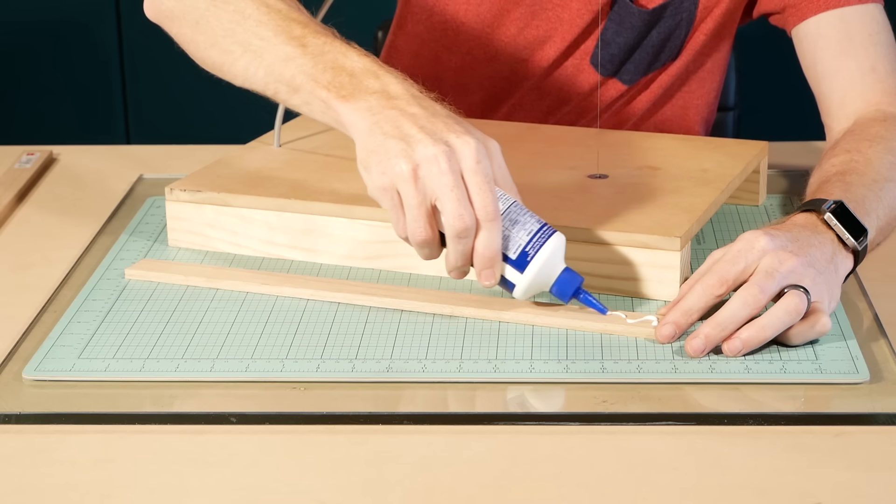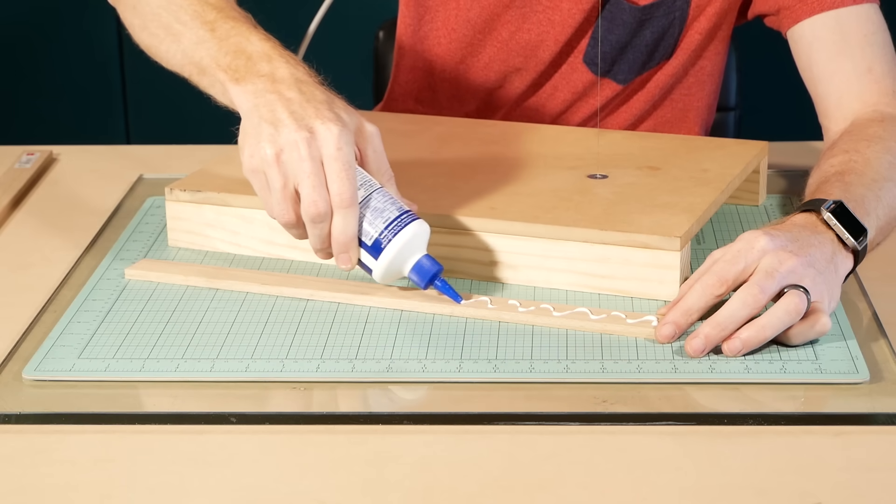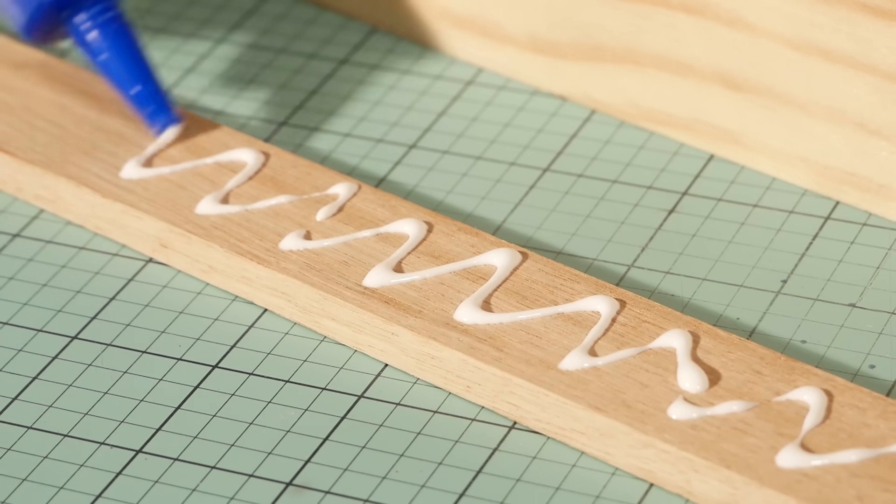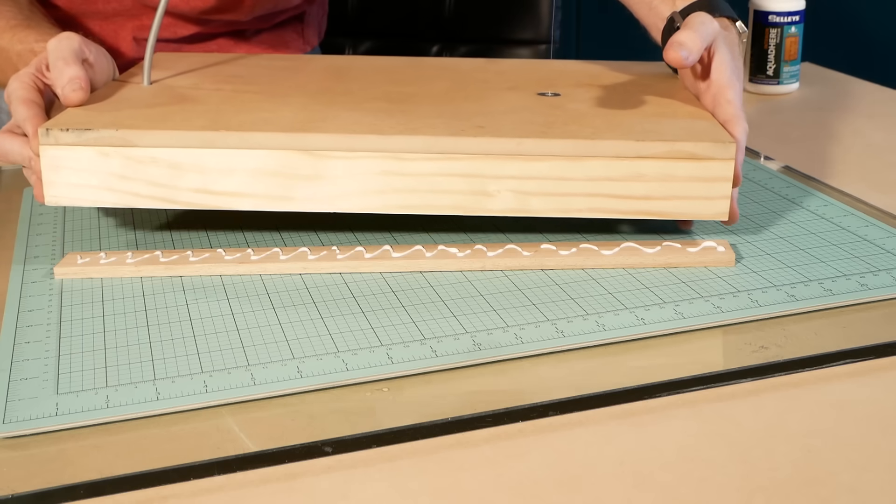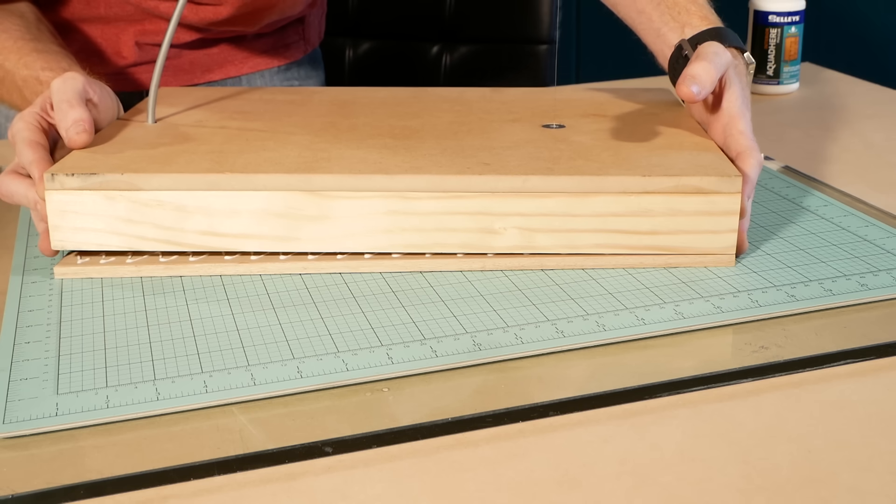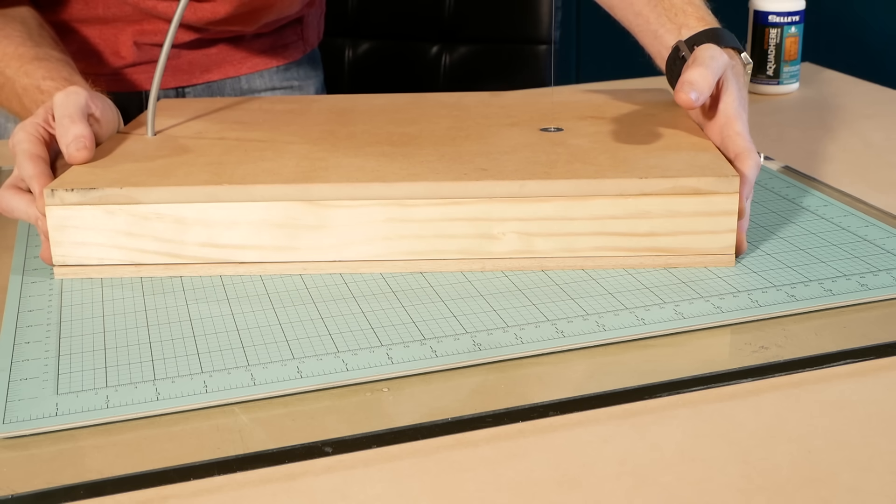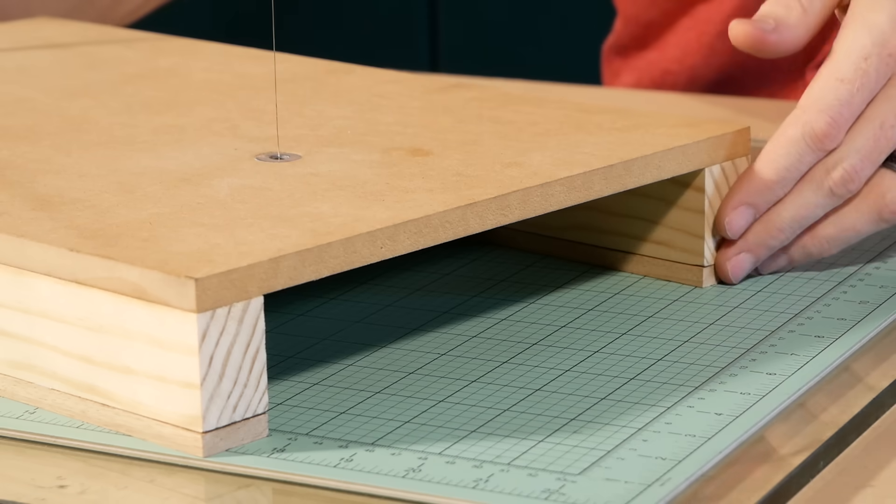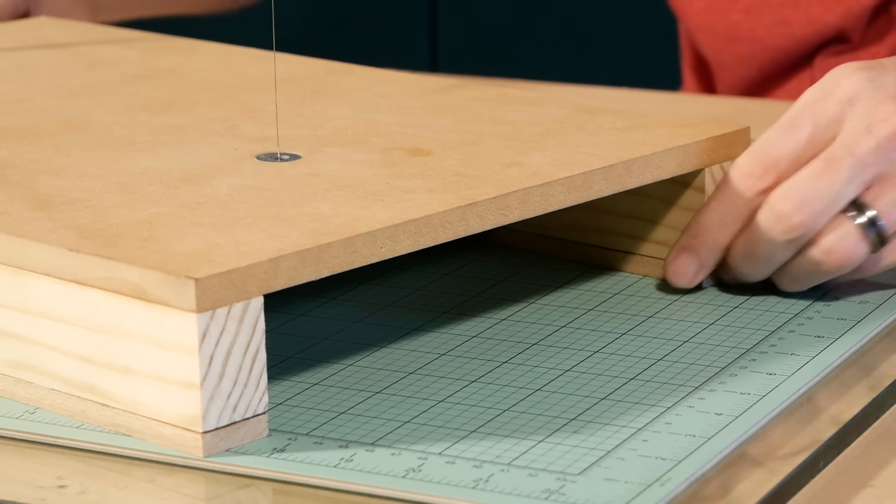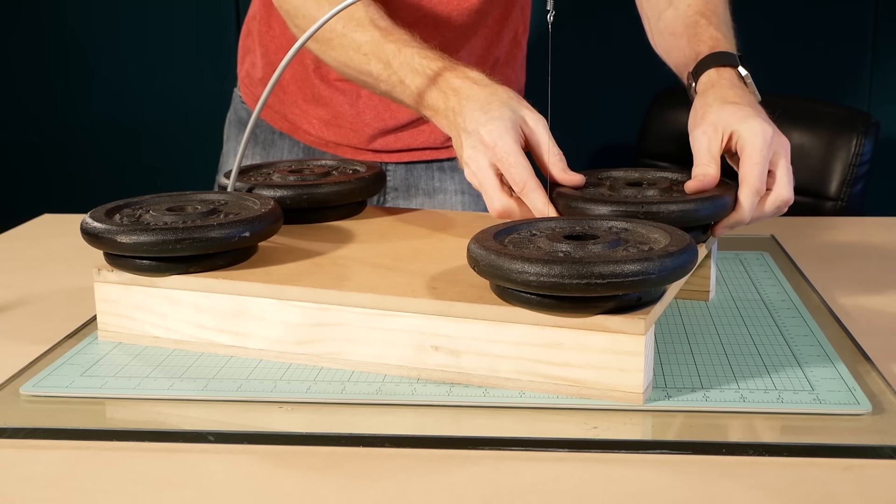Unfortunately the electronics I planned on using for the temperature controller wasn't available in time for this project. So I decided to purchase a different unit to control the wire temperature. However this meant raising the base to create room. This was easy enough to do simply by adding two small strips of wood to the sides.